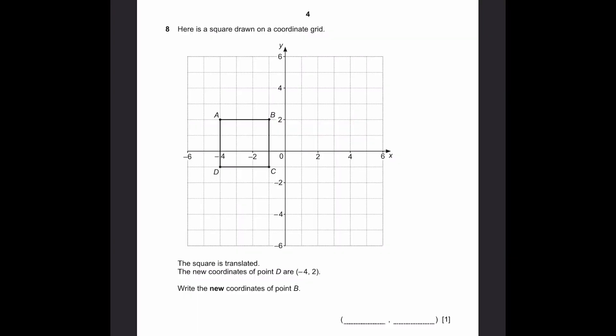Question 8. Here's a square drawn on the coordinate grid. The square is translated. The new coordinates of point D are minus 4 comma 2, which is this point over here. Write down the new coordinates of point B. So, the square is translated to make the coordinates of D become from minus 4 minus 1 to minus 4 2. So, it's going up three units. And the new coordinates of point B will also be going up three units, which will be over here. Marking this point, we can see that there's minus 1 comma 5. Three units up. So, minus 1 comma 5 is the answer.